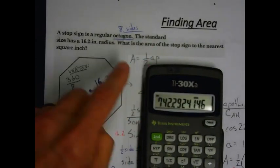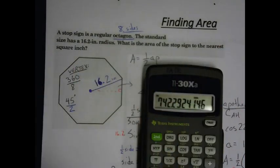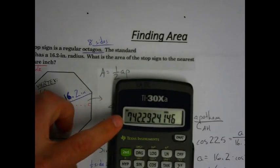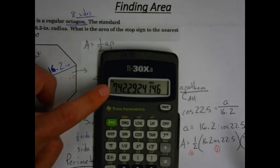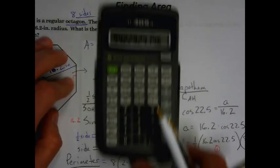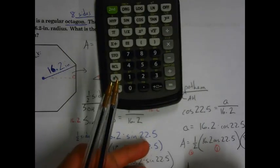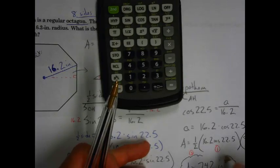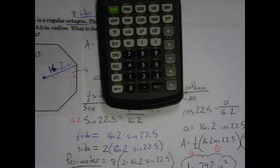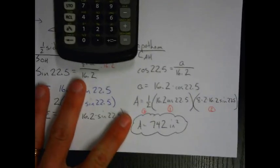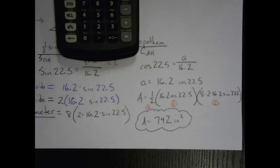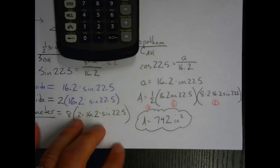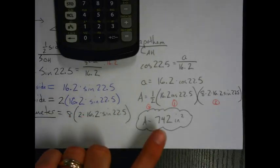The question asks for the answer to the nearest square inch, so that's to the nearest whole number. We save our rounding until the very end. When we round that big calculator value to the nearest whole number, that gives us 742 square inches. So our area is 742 square inches. Make sure you're paying attention to what I'm saying so you don't get lost in the numbers.